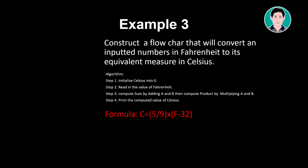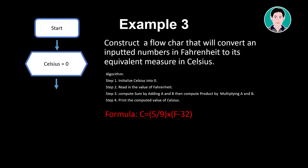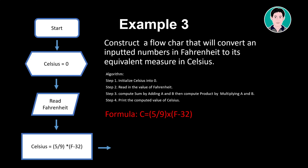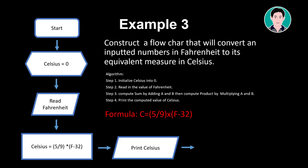Print the computed value of Celsius. Flowchart steps: Start. Celsius equals 0. Read Fahrenheit. Celsius equals 5 divided by 9 multiplied by (F minus 32). Print Celsius. End.